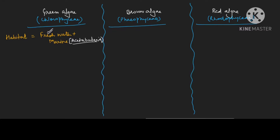For brown algae, only marine habitat. And for red algae also marine habitat, but here we will focus on the marine warm area. So this is the first comparison with respect to habitat.